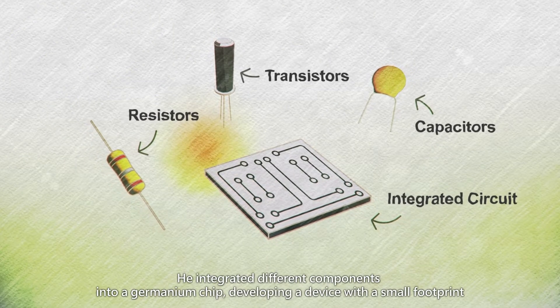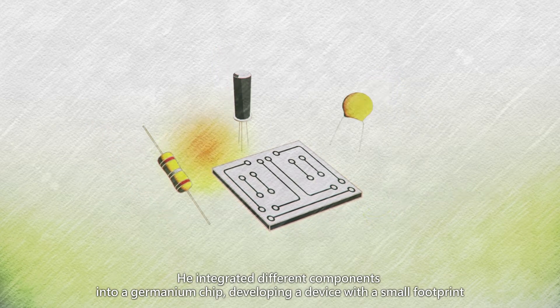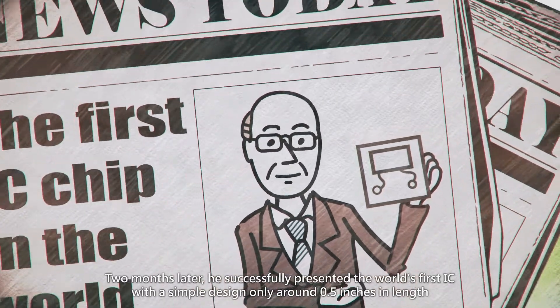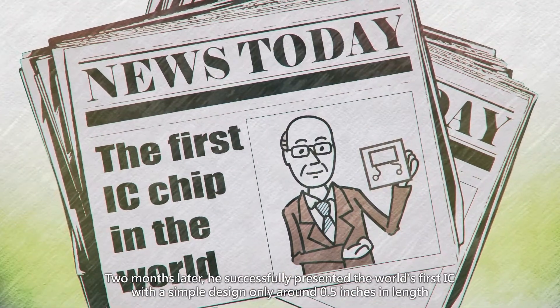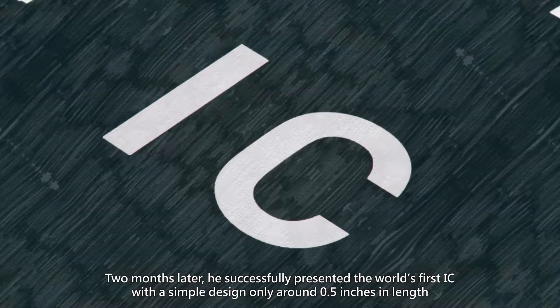He integrated different components into a germanium chip, developing a device with a small footprint. Two months later, he successfully presented the world's first IC with a simple design only around 0.5 inches in length.